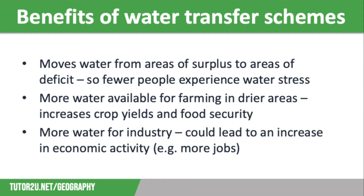There are many benefits to water transfer schemes. These schemes take water from areas of surplus to areas of deficit, meaning fewer people across the UK will experience periods of water stress, which might result in hosepipe bans and other restrictions on water use. This is good news, particularly for gardeners or those with allotments. They also increase the amount of water available for farming and industry in the drier areas of the UK. Farming needs a lot of irrigation during the summer months, so a more reliable water supply means higher crop yields, more income for farmers, and improved UK food security. Water is also heavily used in industry, so a more reliable supply could lead to increased economic activity, with possibly the creation of jobs and economic growth.